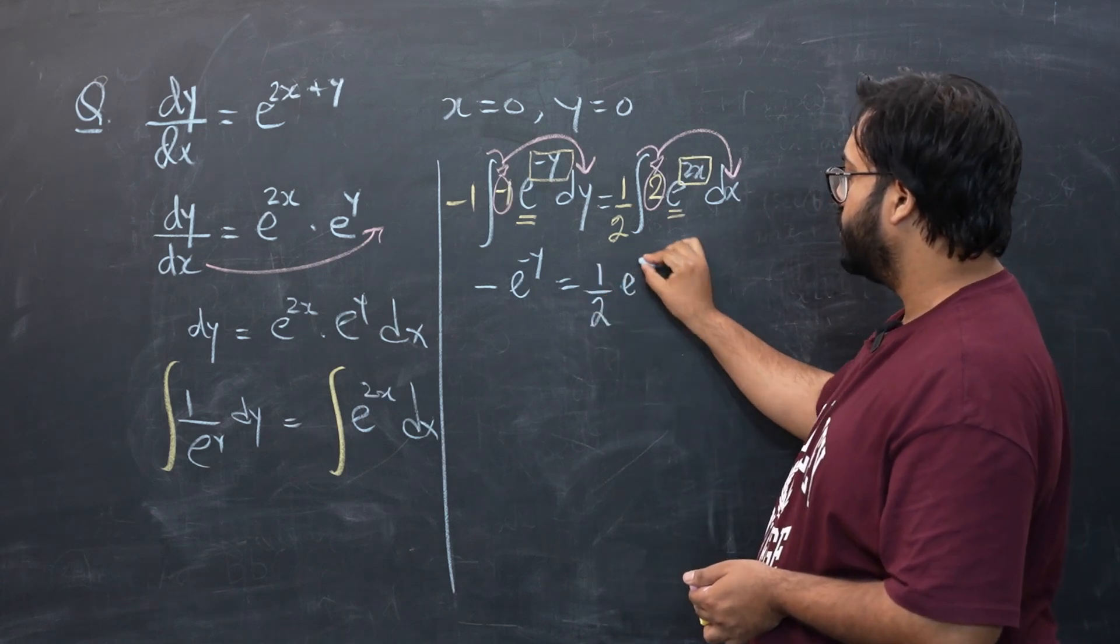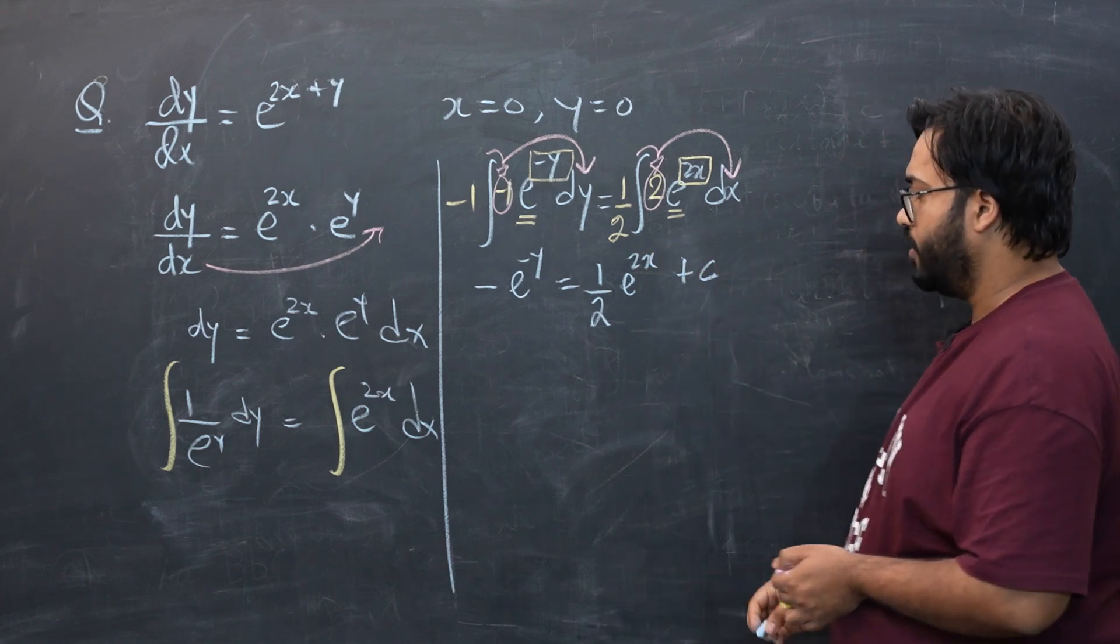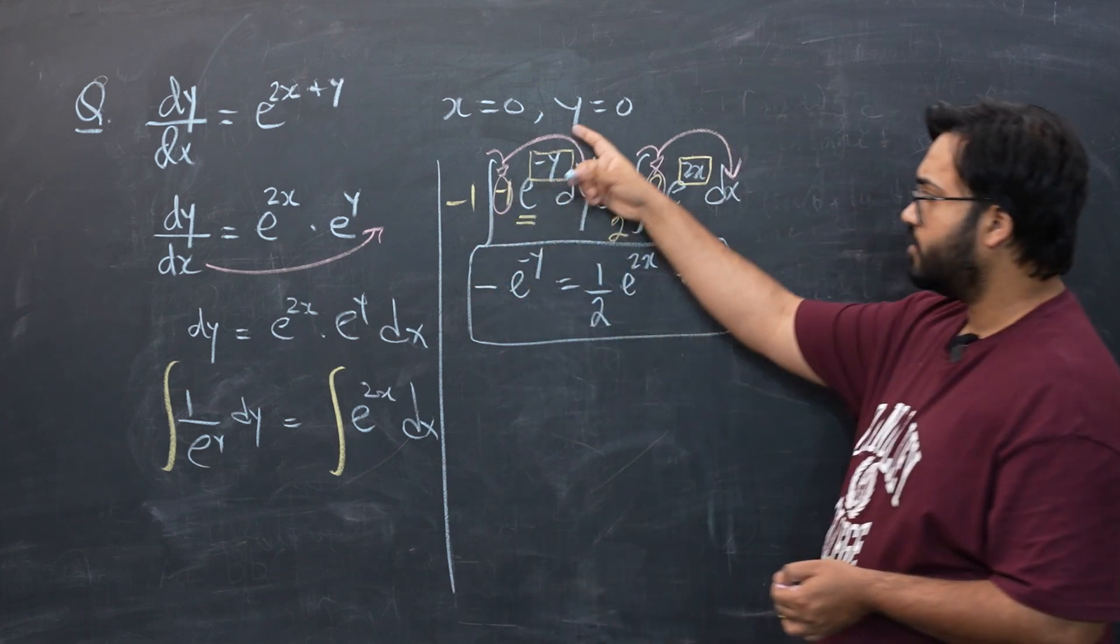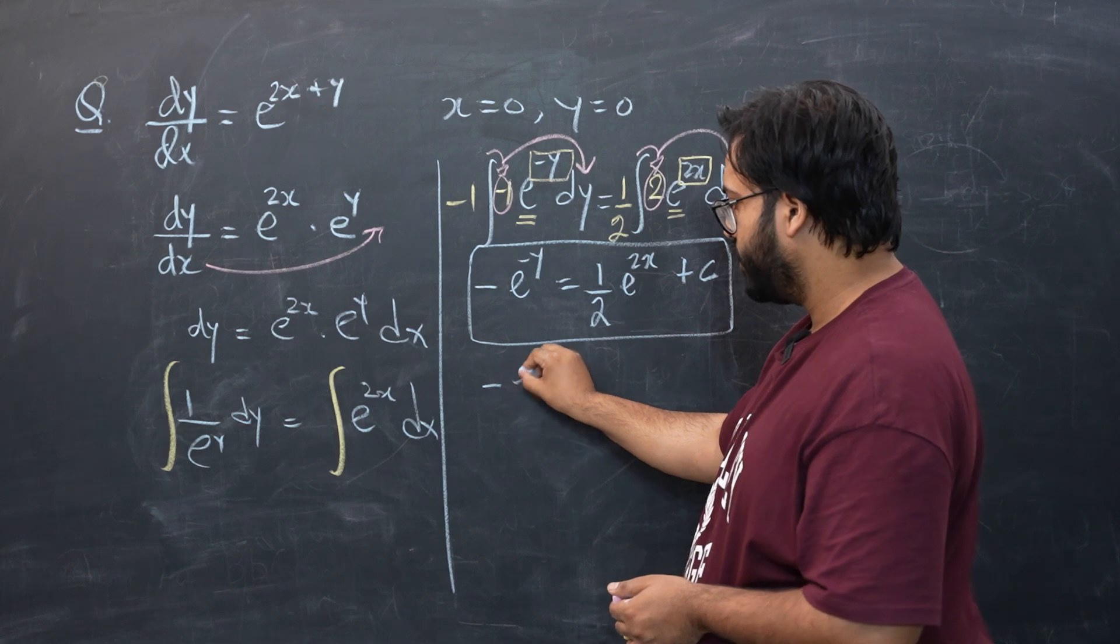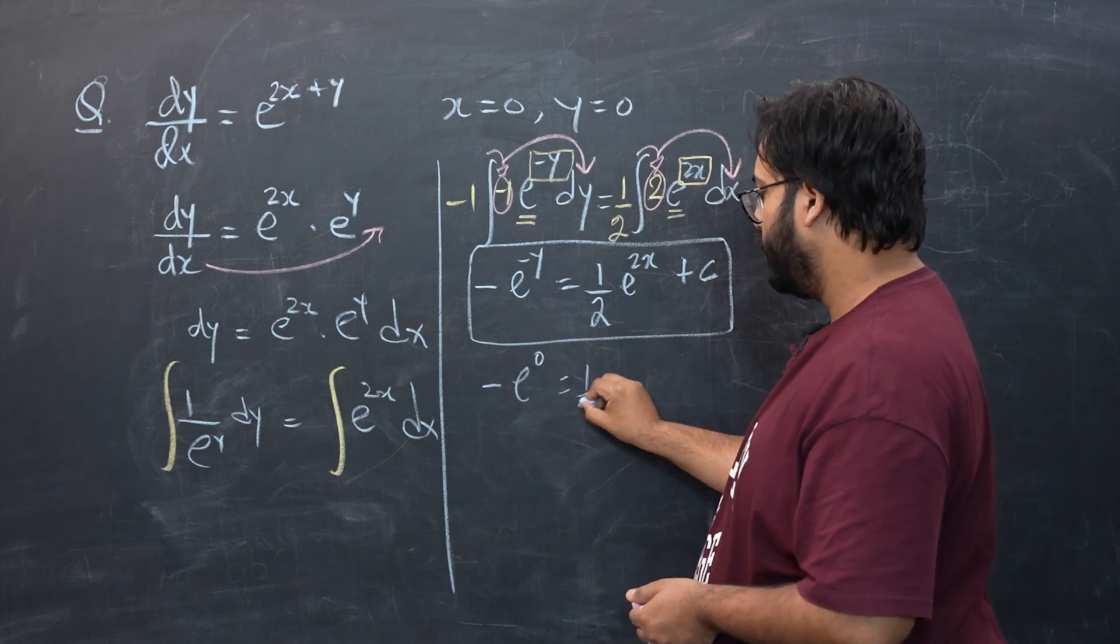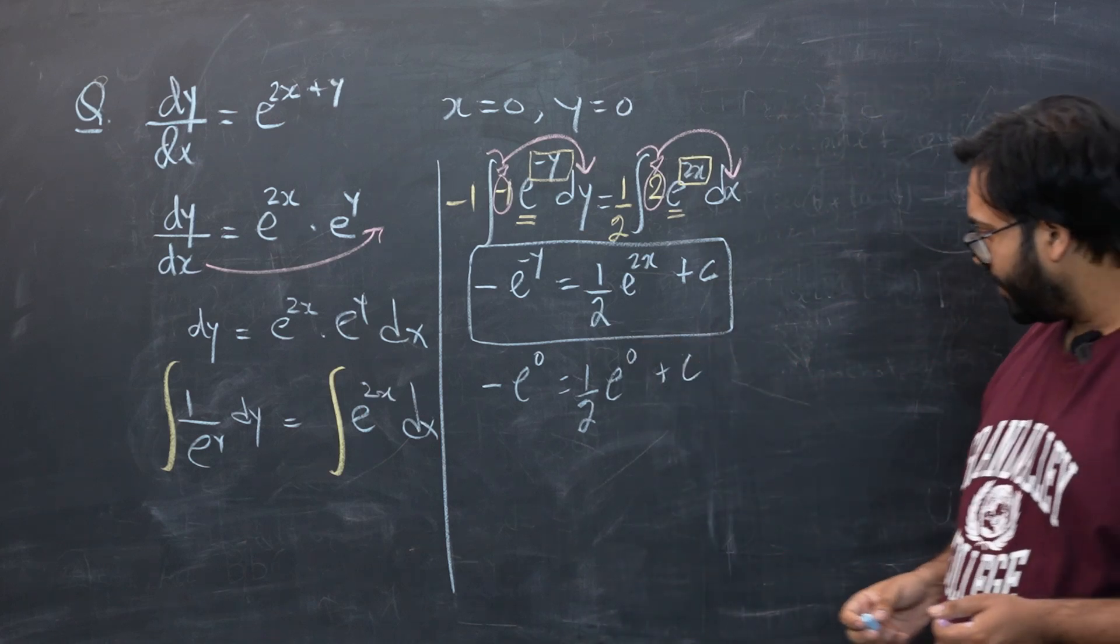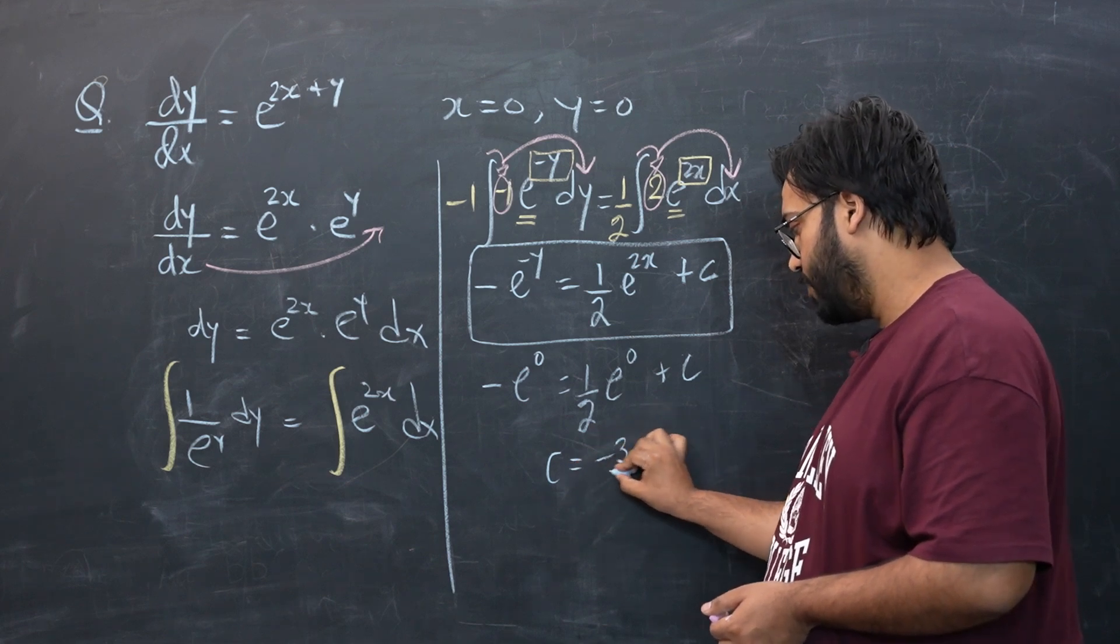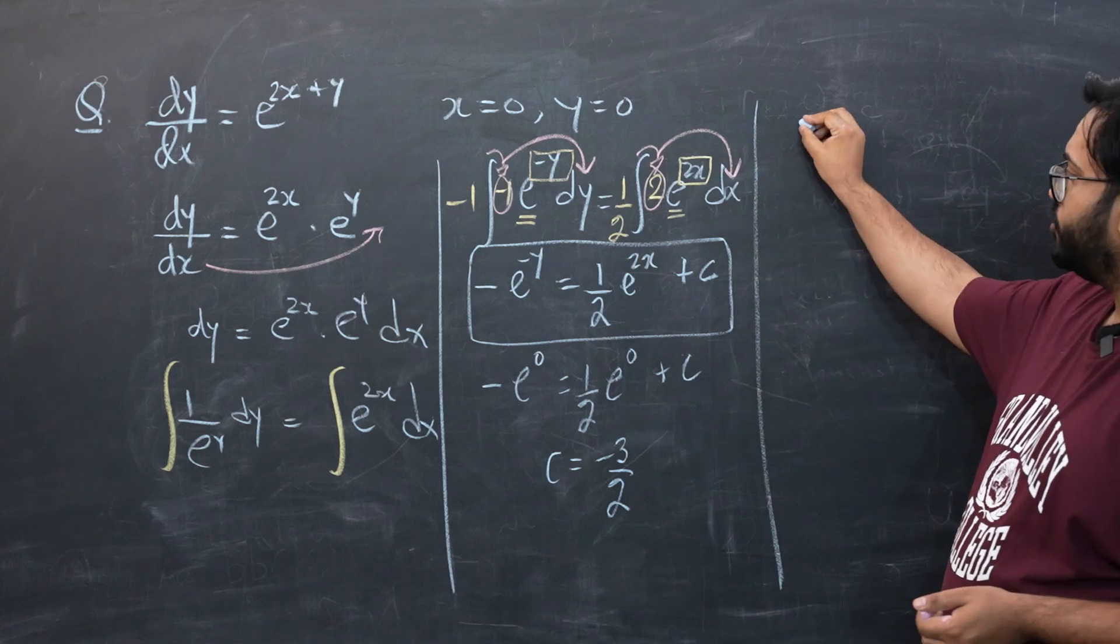And now we know we have to include a constant of integration. And from here we're going to place x as 0 and y as 0 to find c. So e raised to power minus, e raised to power 0 is equals to 1 over 2 e raised to power 0 plus c. So I think c would be equal to minus 3 by 2. So let's bring everything in one equation.